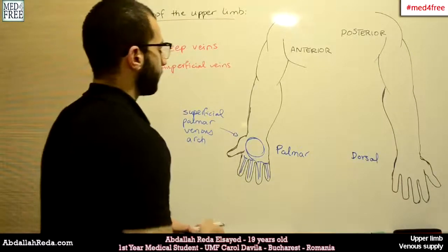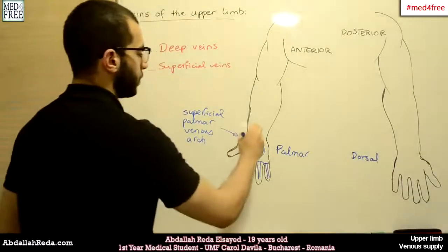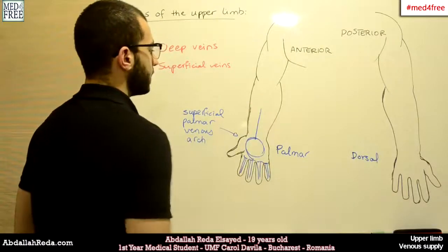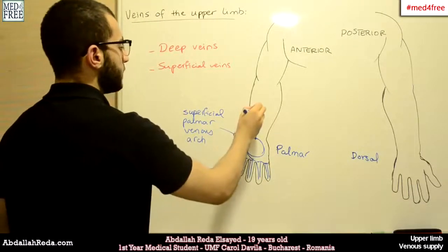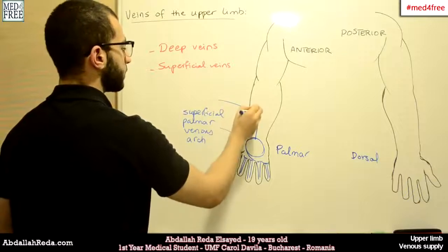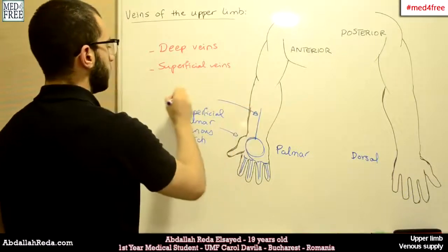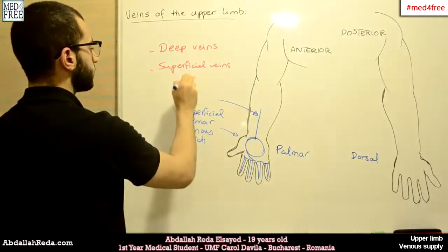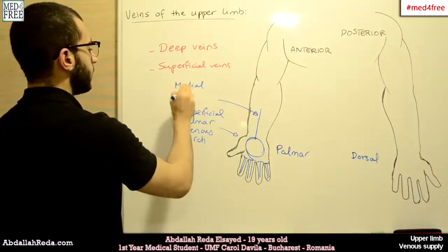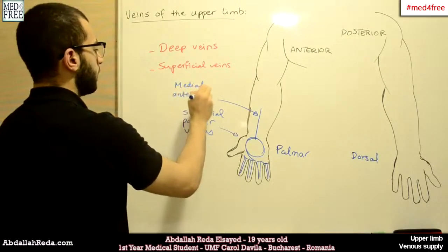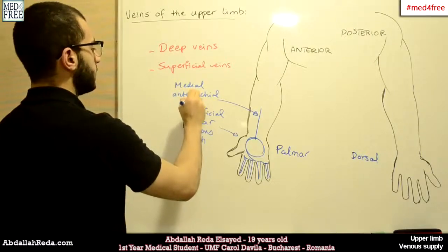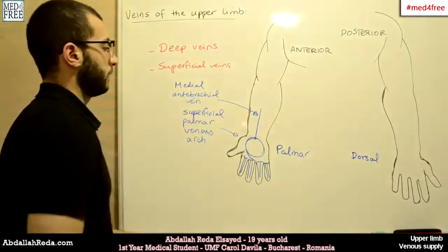This superficial palmar venous arch gives rise to a vein that ascends, and this vein is called the medial antebrachial vein.